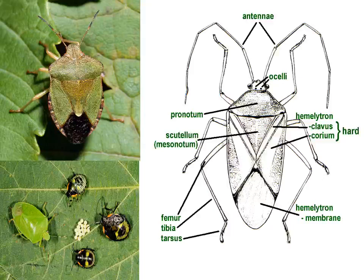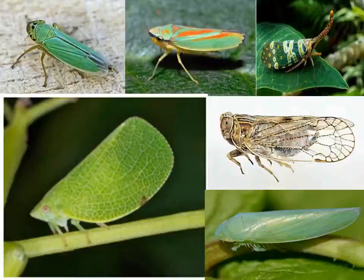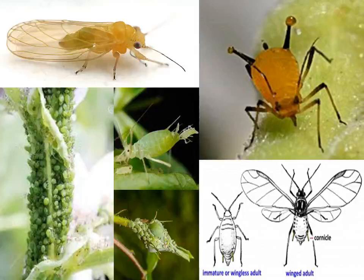The order Hemiptera is divided into three sub-orders, including true bugs, hoppers, and aphids. The body is divisible into head, thorax, and abdomen. The hemi-elytron is present in the case of bugs. These include hoppers, leaf hoppers, scylids, and aphids. Some are wingless, and some have wings. Whenever wings are present, two pairs are there.